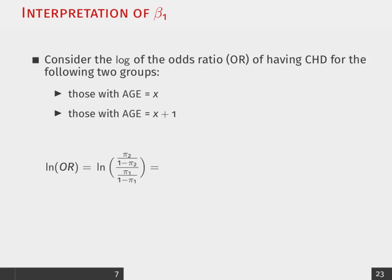So, when we construct that, again, we're thinking about the change of going from x to x plus 1 in the log odds of having CHD.